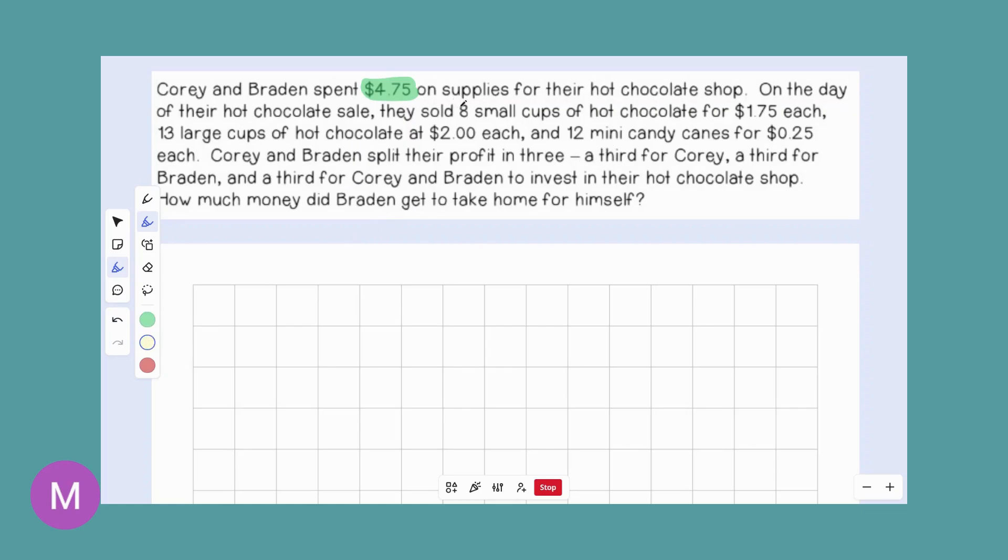And then 13 large cups that they sold for $2 each. So I'm grouping these together with colors. Then they also sold 12 mini candy canes for $0.25 each. So I'm going to come over here. We have some candy canes. There were 12 of them sold for $0.25 each.